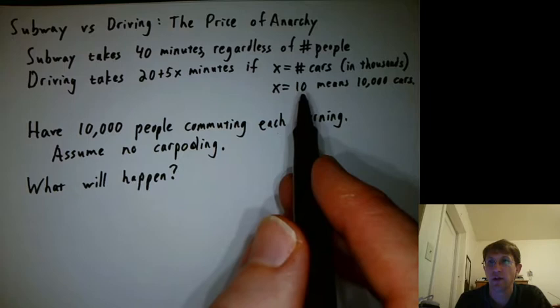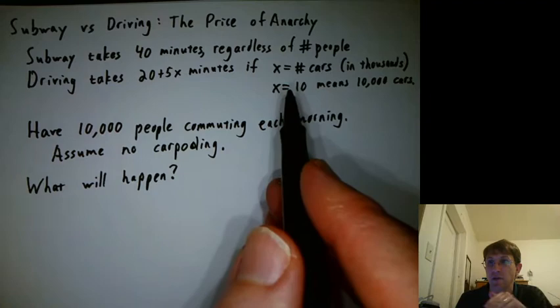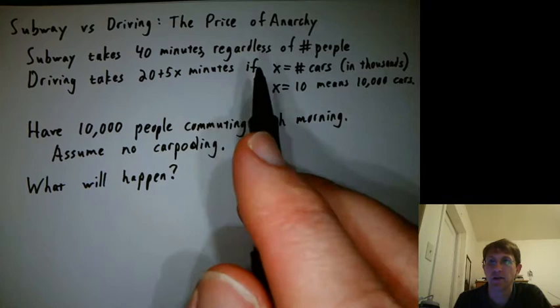So if 10,000 people drive, you take the 10, multiply by 5 to get 50, add that to the 20, and so you'd get 70 minutes to get to the big city. All 10,000 people would each take 70 minutes. It's a very simple model, but let's start simple.